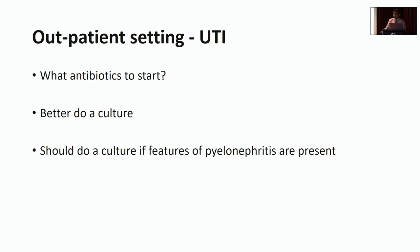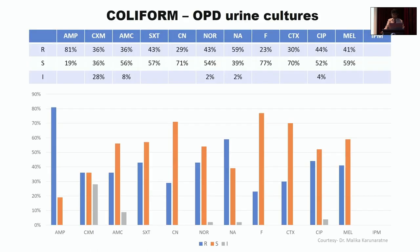Looking at ICU urine culture resistance patterns: the blue bars show resistance to various antibiotics including ampicillin, cefuroxime, co-amoxiclav, cotrimoxazole, gentamicin, norfloxacin, nalidixic acid, and nitrofurantoin. Resistant organisms far outnumber sensitive ones — this is what we see with hospital-acquired infections as a result of antibiotic abuse and misuse.